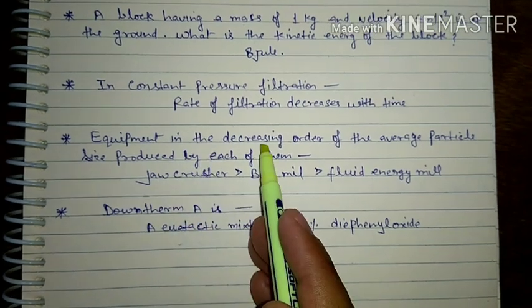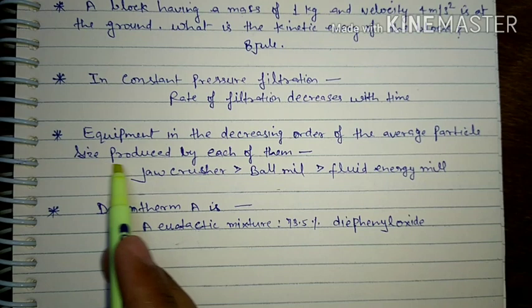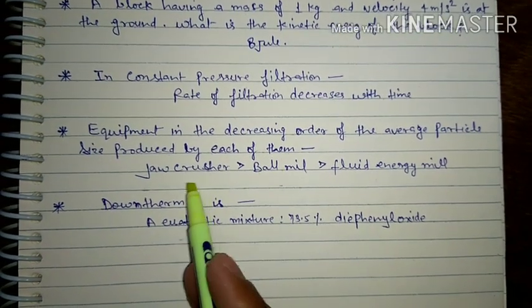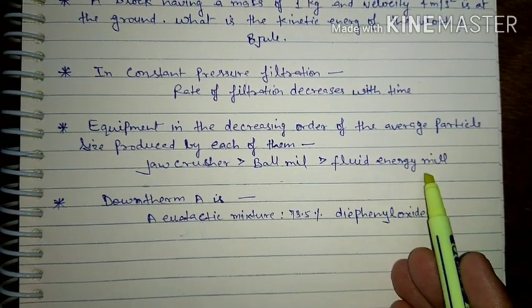Equipment in the decreasing order of the average particle size produced by each of them: First is jaw crusher, second ball mill, and third fluid energy mill.